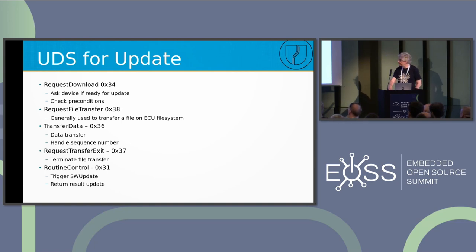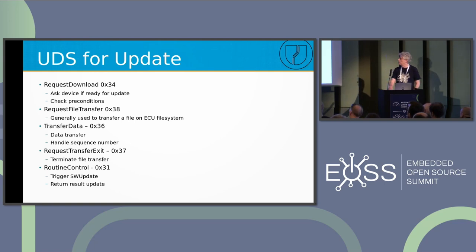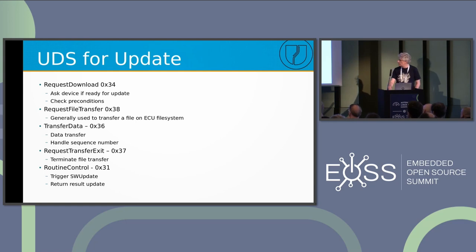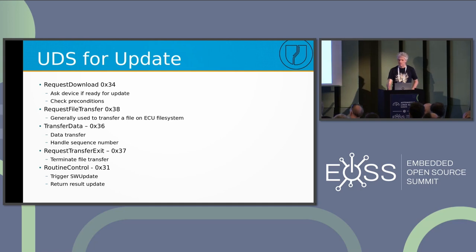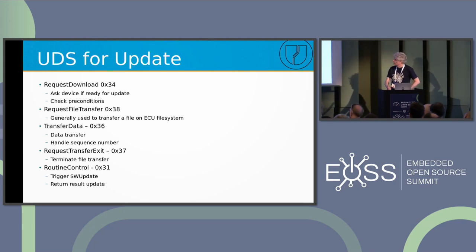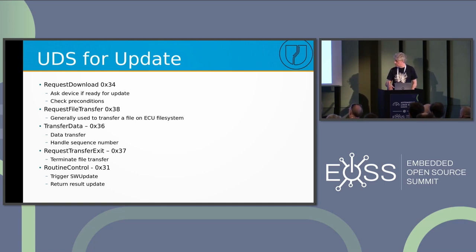There are some UDS commands that can be used for this. Messages not part of this list are forwarded to the UDS application of the ECU, while these specific ones are intercepted and sent to SWUpdate. First, there is Request Download — this checks precondition and whether an update can take place. Second is Request File Transfer, which in UDS is used to put a file into the ECU filesystem, but here it's not used that way — it's just used to trigger the update, since SWUpdate works in streaming mode with zero-copy, installing everything on the fly. Then there's Transfer Data, where the whole package is passed. Finally, Request Transfer Exit closes the transaction.